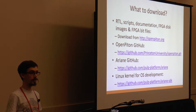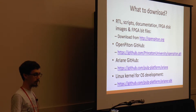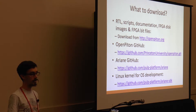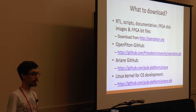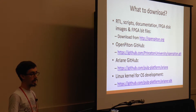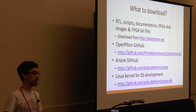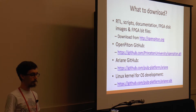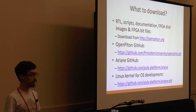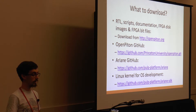Everything that you want to grab is available from openpton.org. You can go to the downloads page, you can get RTL, you can get the scripts, documentation, the FPGA disk images and FPGA bitfiles — they're all available from openpton.org. If you prefer to work with Git, then you can grab from the OpenPton GitHub.